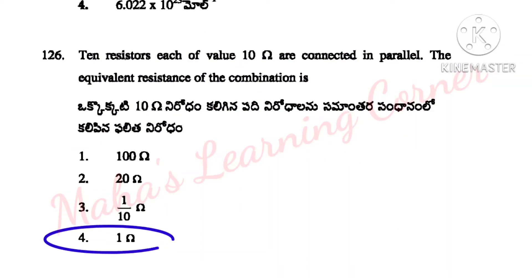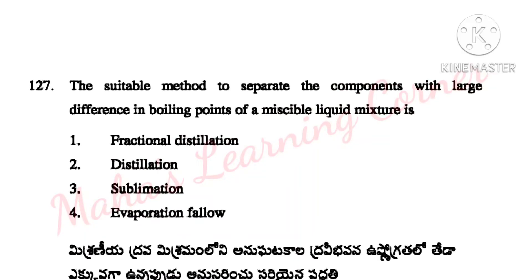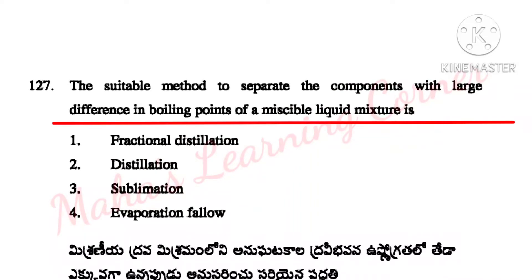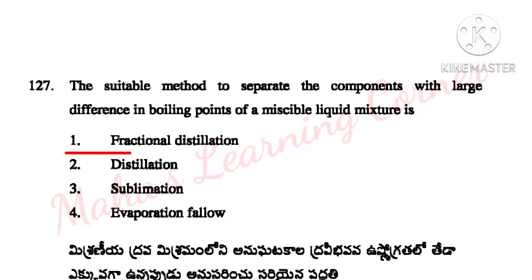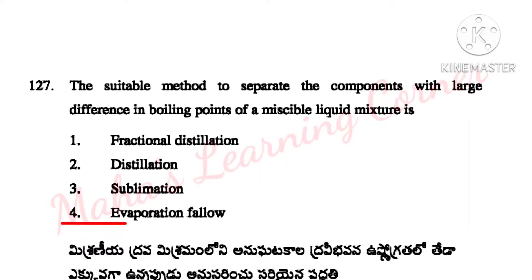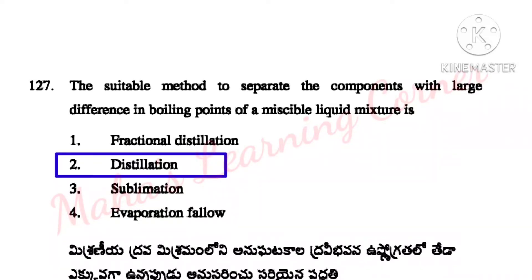The suitable method to separate components with a large difference in boiling point of a miscible liquid mixture is? Options: Fractional distillation, Distillation, Sublimation, Evaporation. Correct answer: Option 2 — Distillation.